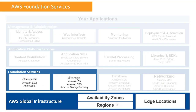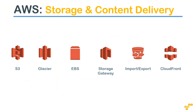We saw the most important services in compute - EC2, Auto Scaling, and Lambda. Now let's look at the different services offered by Amazon in the storage group. This is one of the most popular services in Amazon because it is also the cheapest. There are multiple options available for storage and content delivery.